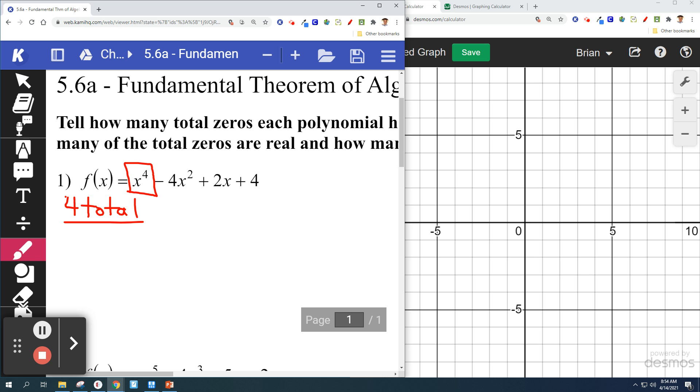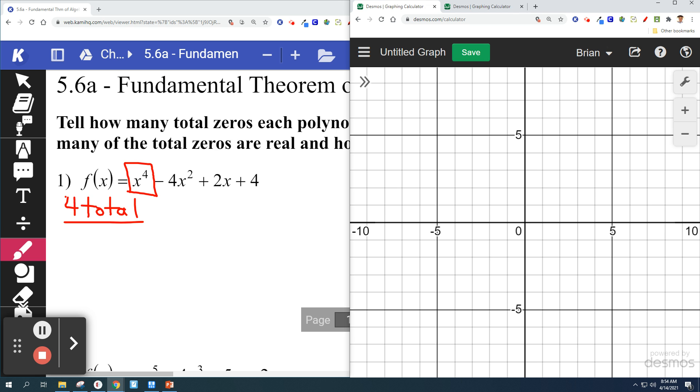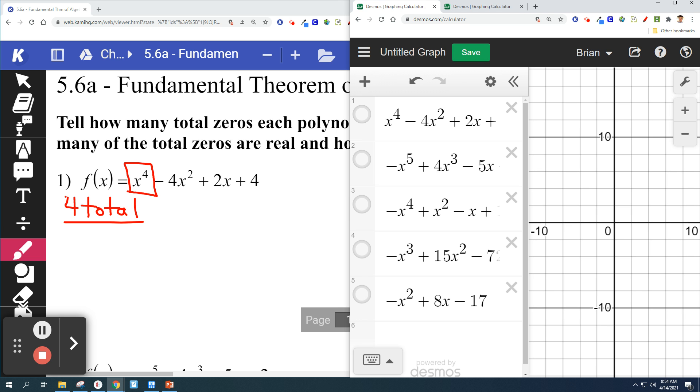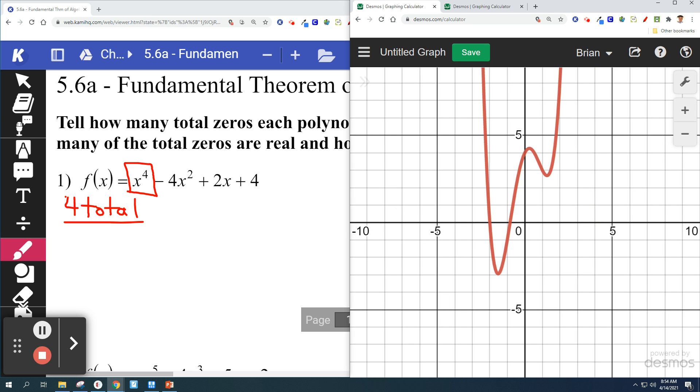But then the directions say how many are real and how many are imaginary, and we don't know that, and so that's where Desmos comes in. What we want to do is we want to graph this. So here it is, x to the 4th. If you look at this picture, the real solutions are the x-intercepts. And so we can see 1 and 2.